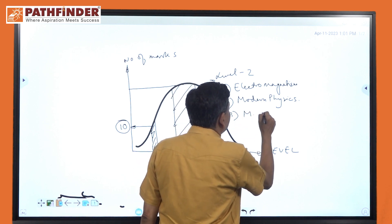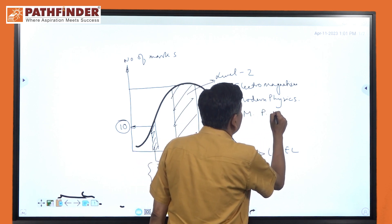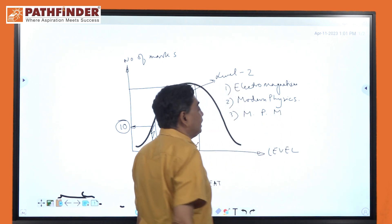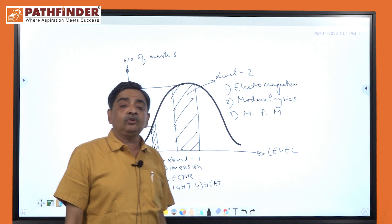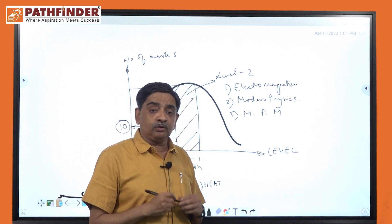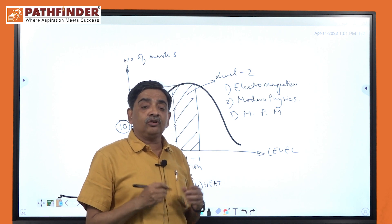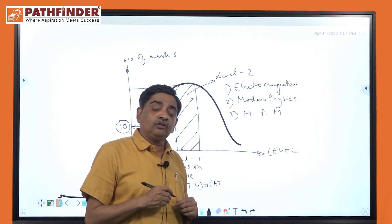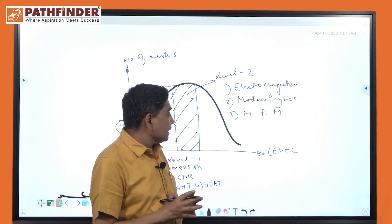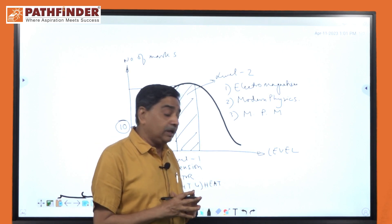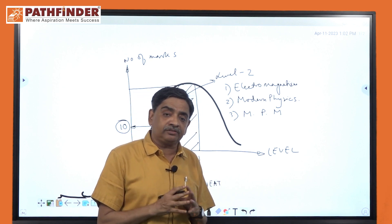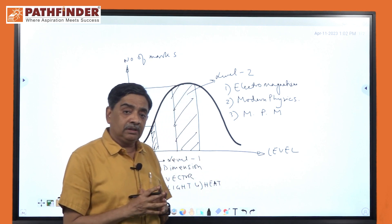Then there is the mechanical property of matter — the gravitational aspects of matter. So there are about 5 questions that we will be having from this chapter as well.